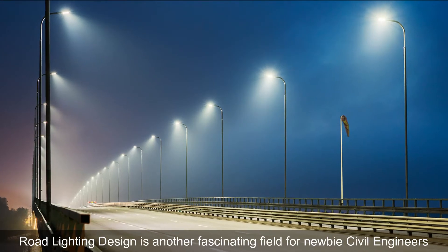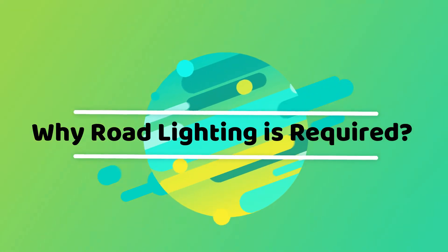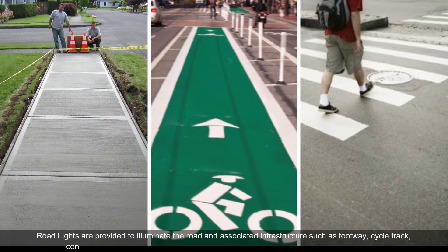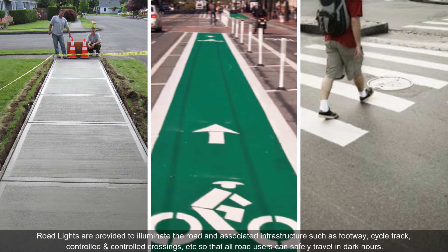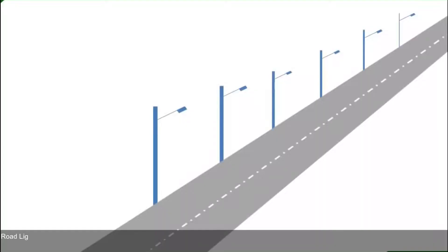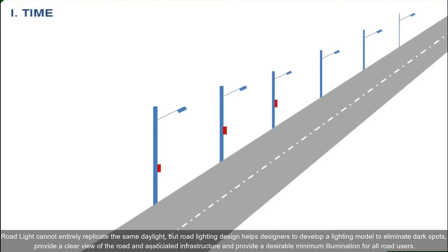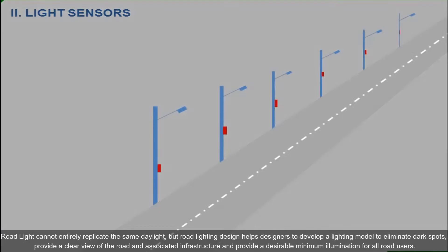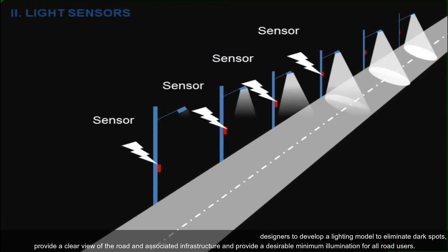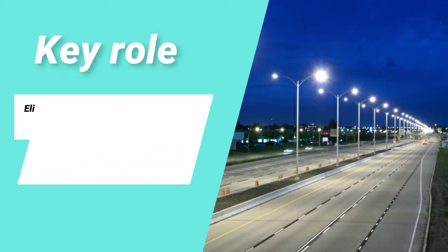Road lighting design is another fascinating field for newbie civil engineers. Road lights are provided to illuminate the road and associated infrastructure such as footway, cycle track, and controlled crossings, so that all road users can safely travel in dark hours. Road lighting design helps designers develop a lighting model to eliminate dark spots, provide a clear view of the road, and provide a desirable minimum illumination for all road users.